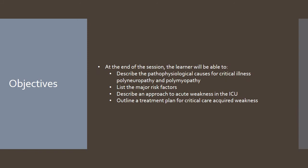Critical illness acquired weakness is an important topic because it is very common. Throughout this talk we'll cover a fair chunk of pathophysiology focusing on the causes of critical illness polyneuropathy and polymyopathy, the risk factors to watch for when caring for a critically ill patient, an overall approach to the acutely weak ICU patient, and finally treatment strategies to both prevent and treat critical care acquired weakness.